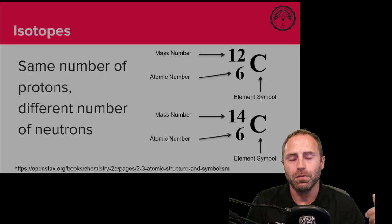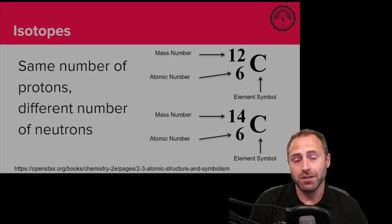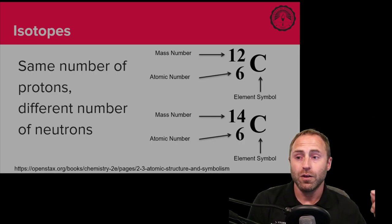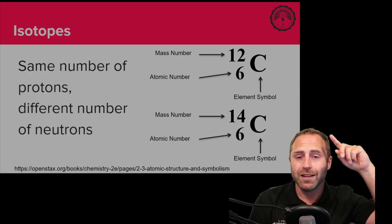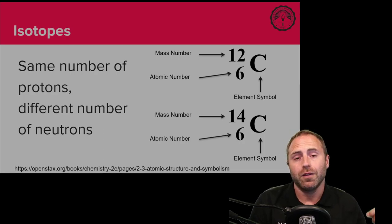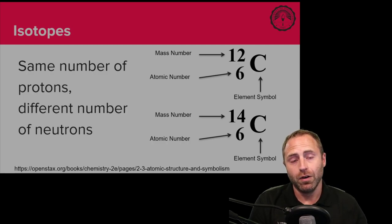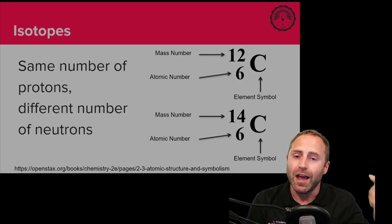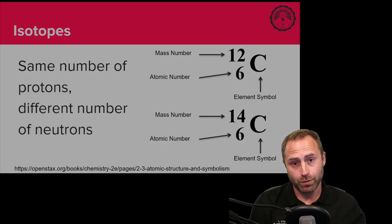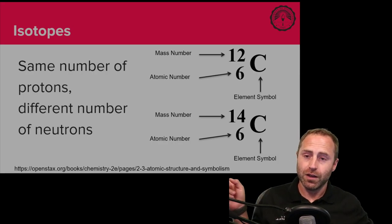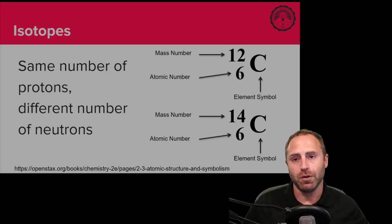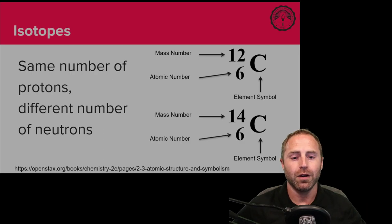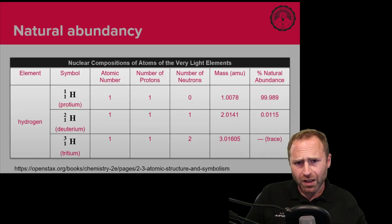It's the change in the ratio of C-12 relative to C-14 over time that allows us to perform carbon dating. Isotopes have the exact same atomic number — atomic number means number of protons. Mass number is protons plus neutrons. For carbon-12 that's six protons plus six neutrons equaling 12. For C-14, 14 minus the six protons leaves eight neutrons. You can always find the number of neutrons by subtracting the atomic number from the mass number.